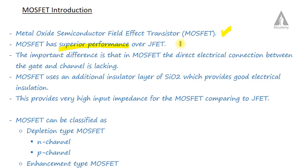The main difference between the MOSFET and the JFET is that there is no direct electrical connection between the gate and channel. This is an important distinguishing characteristic when comparing MOSFET with JFET.